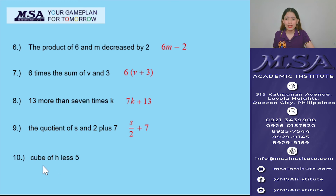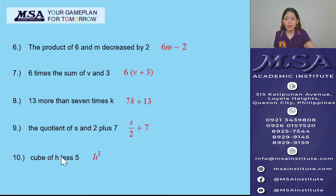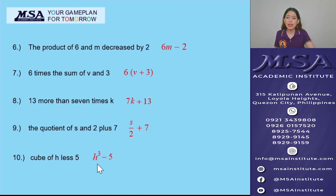Last example, number 10: 'Cube of h less 5.' The cube of h is h raised to 3 (h³), and less 5 means minus 5. So the translation is h³ minus 5.